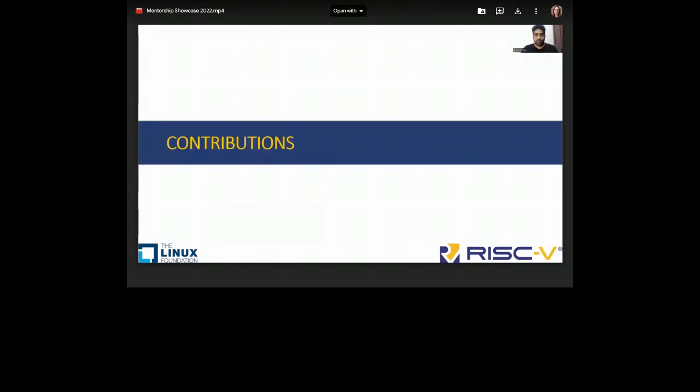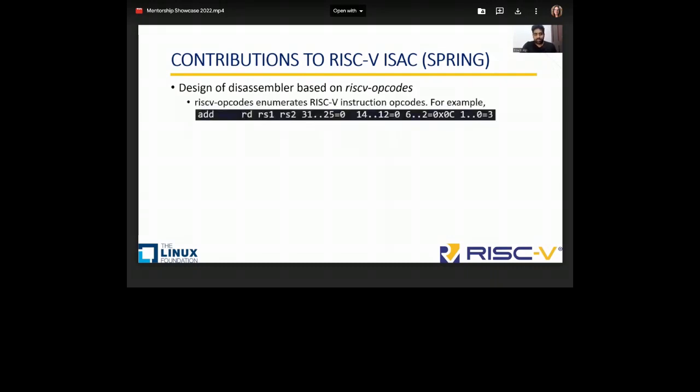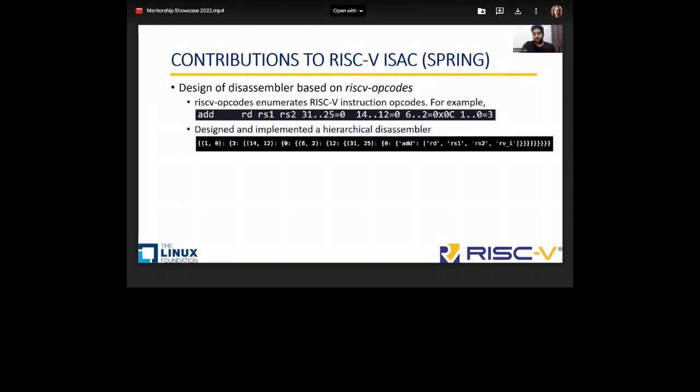For the spring edition, my contributions to RISC-V ISAC. RISC-V ISAC uses an internal disassembler which is used to decode a trace file. This implementation of the disassembler is rather static, and as we all know, RISC-V is not static. So there is a repository called RISC-V opcodes which enumerates all RISC-V instructions. We can actually use this and parse it to generate a data structure which can be used to hierarchically decode an instruction.